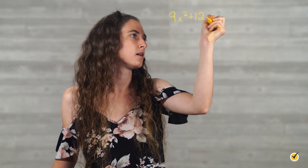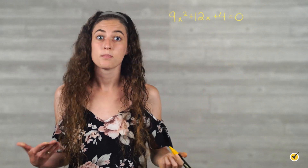Now it's your turn. I'm going to give you a quadratic equation and you need to use the quadratic formula to identify the possible roots for x. The equation is 9x squared plus 12x plus 4 equals 0. Pause the video here and try it yourself, and when you're done, resume the video and we'll go over everything together.